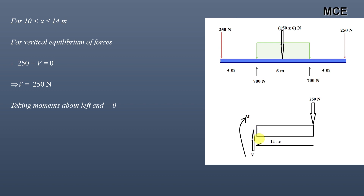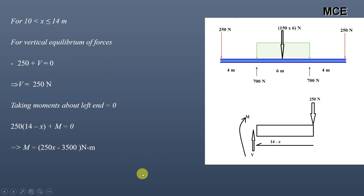Taking moments about the left end of this section equal to zero: the moment of 250 newtons about the left end is 250 into (14 minus x), which is clockwise so positive, and M is also clockwise so positive. Thus 250 into (14 minus x) plus M equals zero, giving M equal to 250x minus 3500 newton-meters. This is the moment function for the third part of the beam.